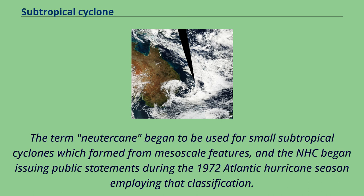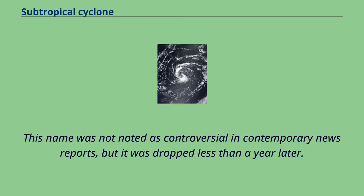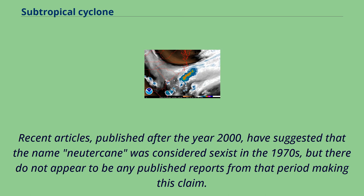The term neutercane began to be used for small subtropical cyclones which formed from mesoscale features, and the NHC began issuing public statements during the 1972 Atlantic hurricane season employing the classification. This name was not noted as controversial in contemporary news reports, but it was dropped less than a year later. Recent articles published after the year 2000 have suggested that the name neutercane was considered sexist in the 1970s, but there do not appear to be any published reports from that period making this claim.